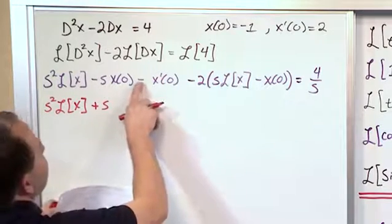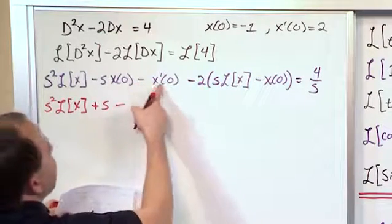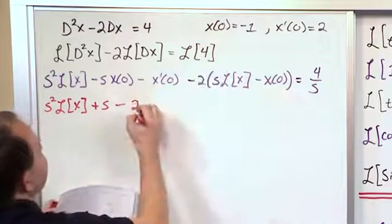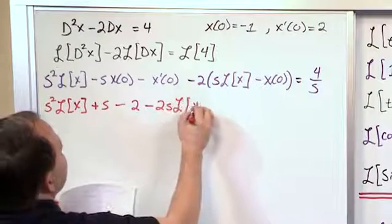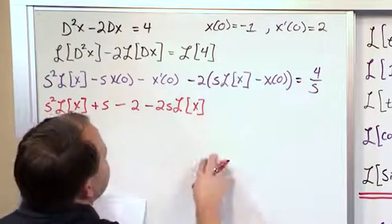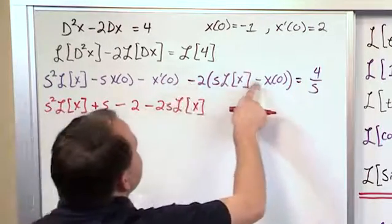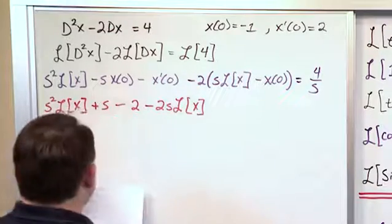And then over here we have minus x'(0), which is 2, so we'll put a 2 there. And then we have minus 2 times s times the Laplace Transform of x from distributing this in, and then negative times negative gives me a positive.